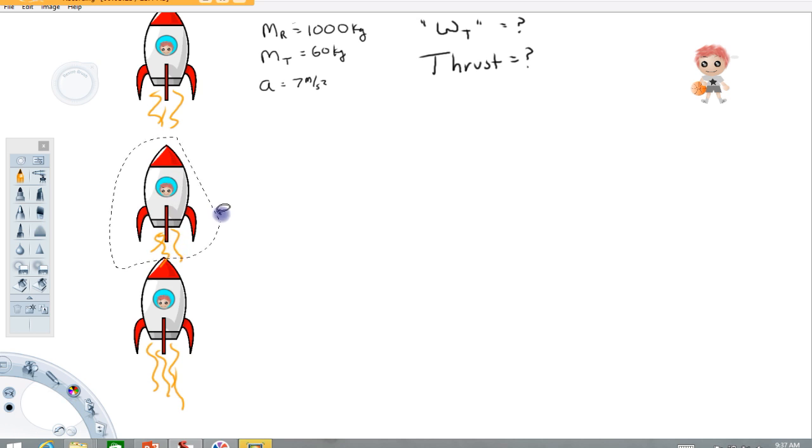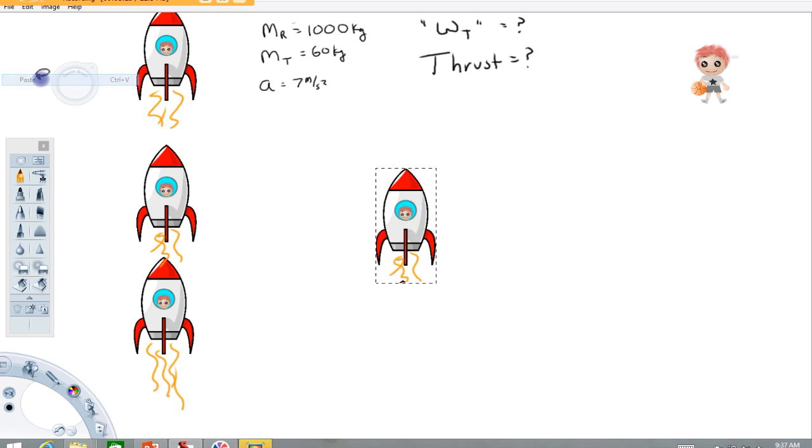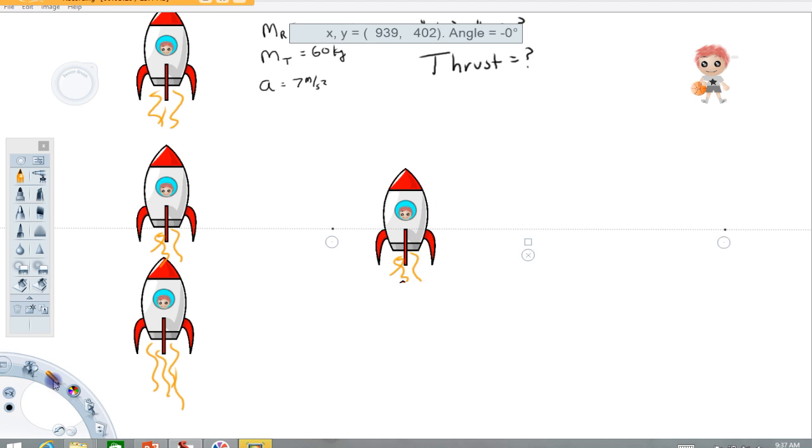So I'm going to draw a free body of the rocket. So to do that here I'm going to need another picture of it. And if we think about the forces acting on the rocket, let's start with this gravitational force acting down equal to mg.